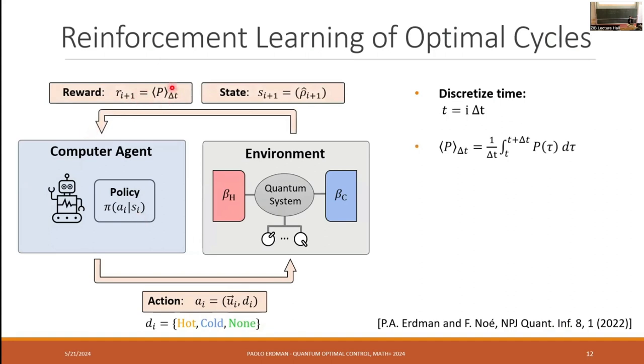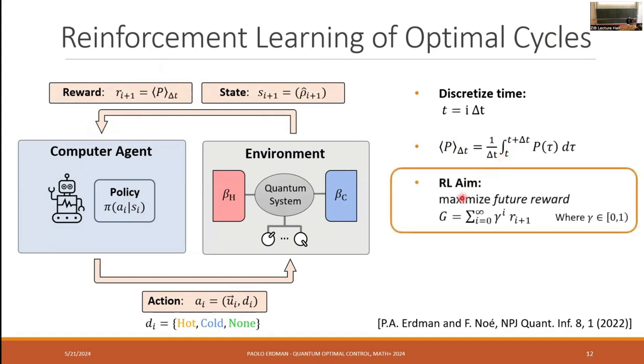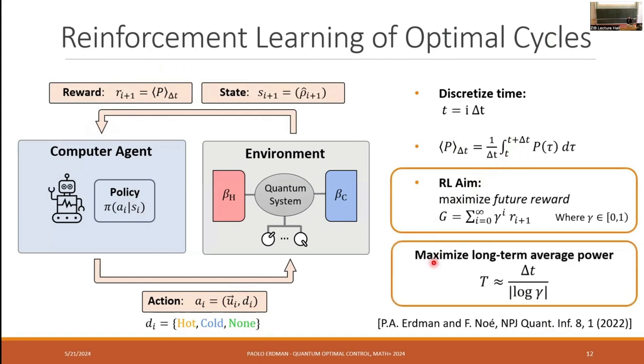Then as reward, we choose what is the power that was delivered by the engine in this time step dt. But since the aim of reinforcement learning is to learn how to choose these actions such that you maximize the sum of the future rewards, we will end up optimizing the power averaged over a long time scale p, which scales as one over log gamma, where gamma is known in reinforcement learning as a discount factor. It's a number between zero and one. And if we choose this close enough to one, we're really optimizing the power over a long time scale capital T.